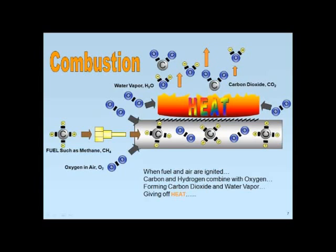If I've got a pound of steam and I'm going to condense it back to a liquid, I'm going to give up 1,000 BTUs per pound. Think of a cooling tower — it's an evaporative device, and every pound of water I evaporate soaks up 1,000 BTUs. So going back to combustion: for every pound of water vapor going up this chimney, you are throwing away 1,000 BTUs per pound.